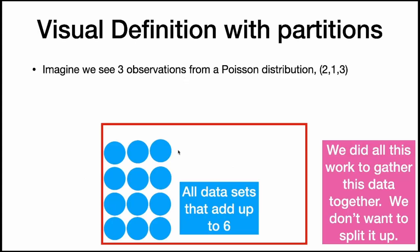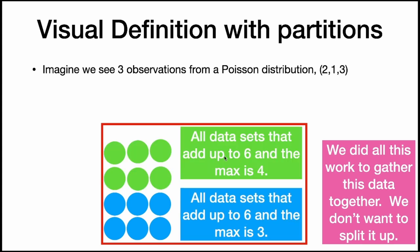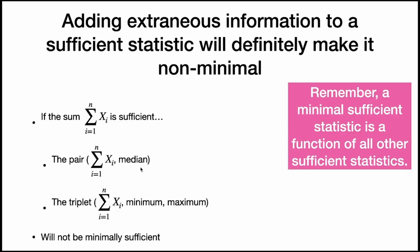How can we see that visually? We already grouped our data into all data sets that add up to 6. If we have a sufficient statistic that includes extraneous information like the maximum, then we're going to split this data set into different parts: data sets that add up to 6 where the max is 4, data sets that add up to 6 and the max is 3. You can imagine we could split the data set further into many different groups — and that's less inclusive, so this is not minimal. We don't want to add extraneous information like this.